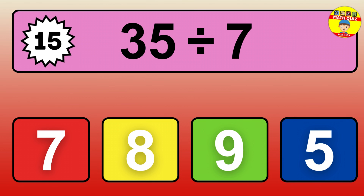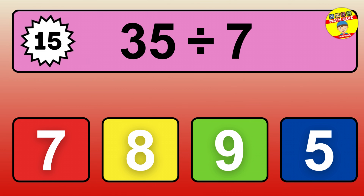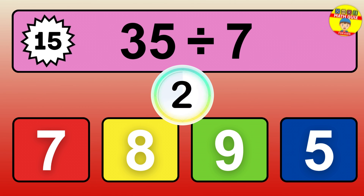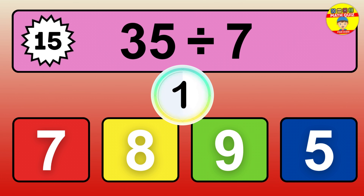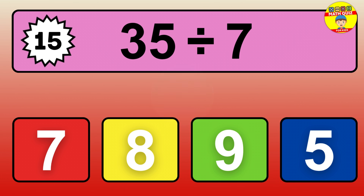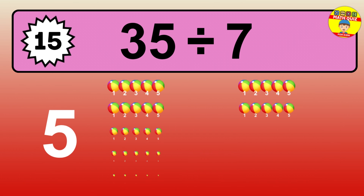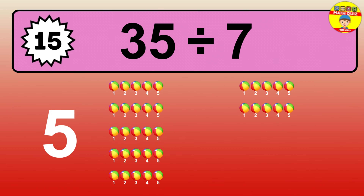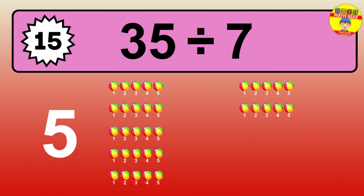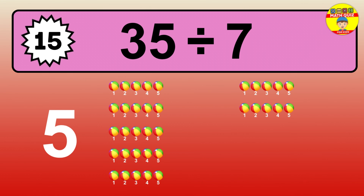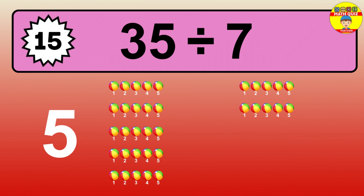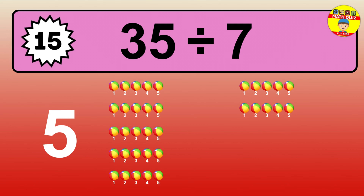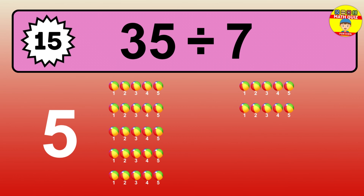35 divided by 7 is… time to think. Let's go to the solution. Divide the number 35 by 7. Each group contains 7 units. So, dividing 35 by 7 results in 5 equal groups. Thus, the result is… 35 divided by 7 equals 5.